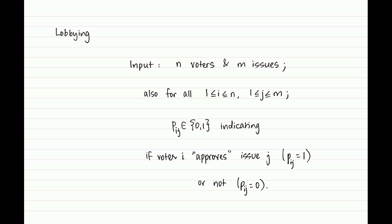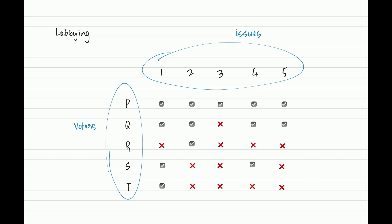In lobbying, we have n voters and m issues. Voters have opinions over these issues expressed in binary form. The preference matrix has p_ij equals 1 if voter i approves of issue j and 0 otherwise. Let's look at an example with five issues and five voters — check marks indicate approval and crosses indicate disapproval. We assume that if an issue has a majority vote — more people approve than disapprove — then that issue gets accepted.